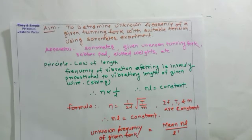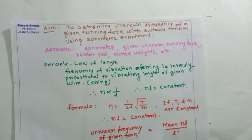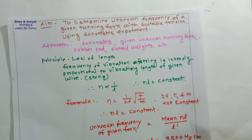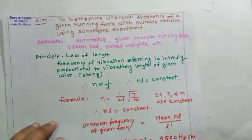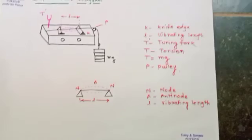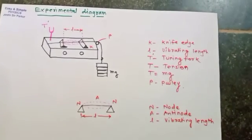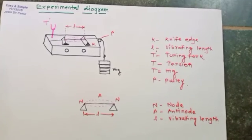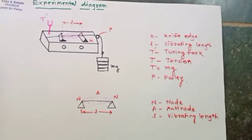Given mean NL is equal to 9500 hertz centimeter. So we want to find L dash. For finding, let us see the experimental diagram for sonometer first law, law of length.